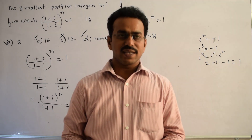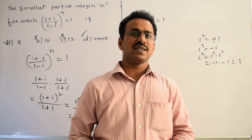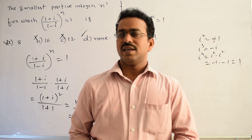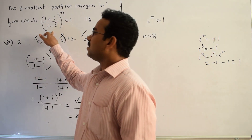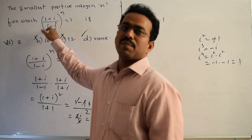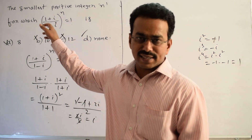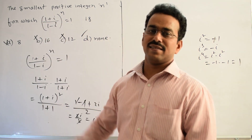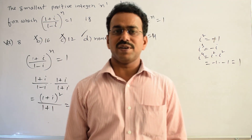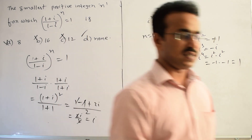The key concept here: we simplified (1 plus i) by (1 minus i) by applying the process of rationalization. Thanks for watching, all the best.